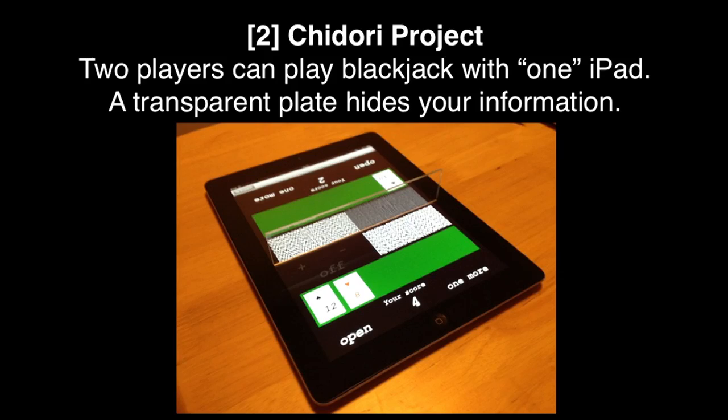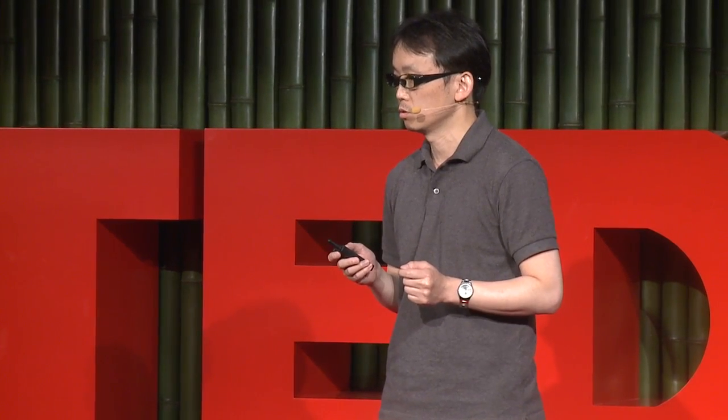The second project is the Chidori Project. When you put a transparent plate on your iPad, two players can play blackjack with just one iPad. The transparent plate hides your information from the opponent. In other words, you can see your information only through the plate.